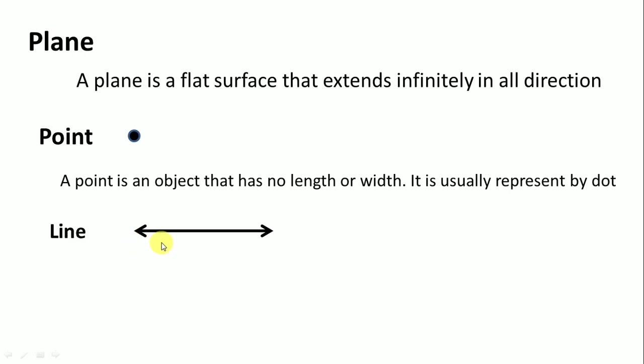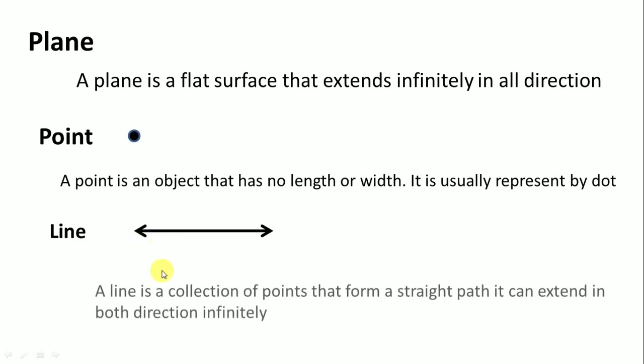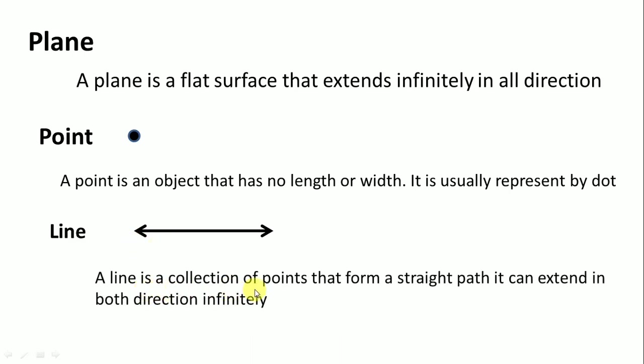Line. Here is the line. What is line? A line is a collection of points that form a straight path. It can extend in both directions infinitely. Here the arrows show that it can be extended infinitely. Next, line segment. Here is our line segment. A line segment is a part of line and it has two end points. And it is the part of line.